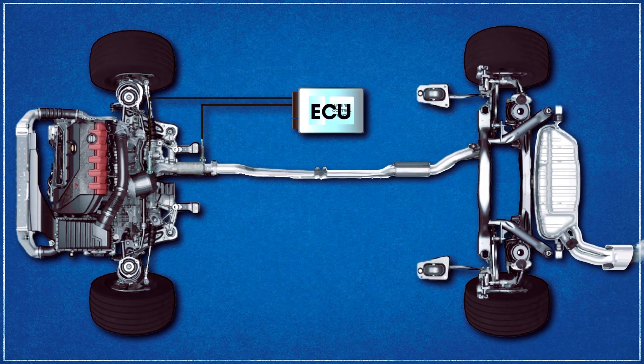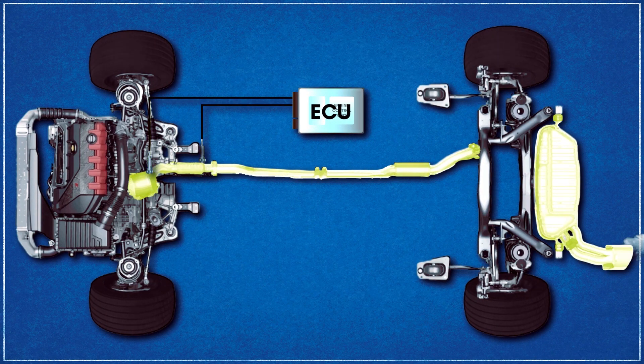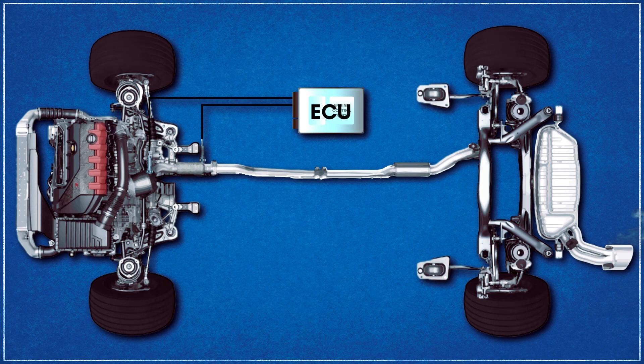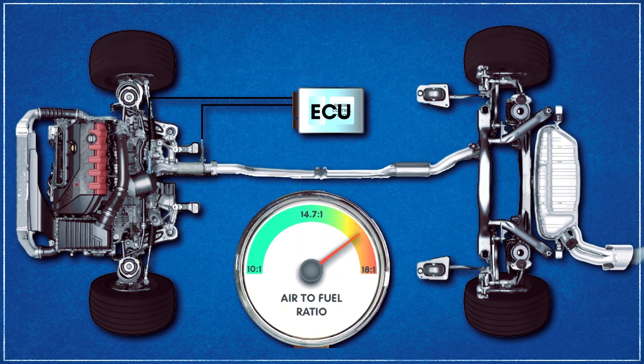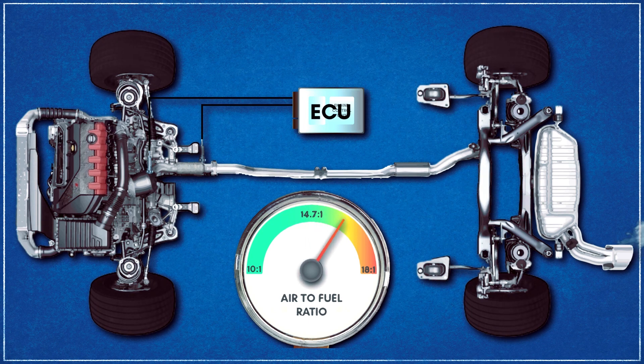Typically, oxygen sensors are located on an engine's exhaust system, and they help determine in real time whether the air-fuel ratio of a combustion engine is rich or lean. But despite being located on the exhaust, oxygen sensors do not directly measure the air or fuel entering the engine.